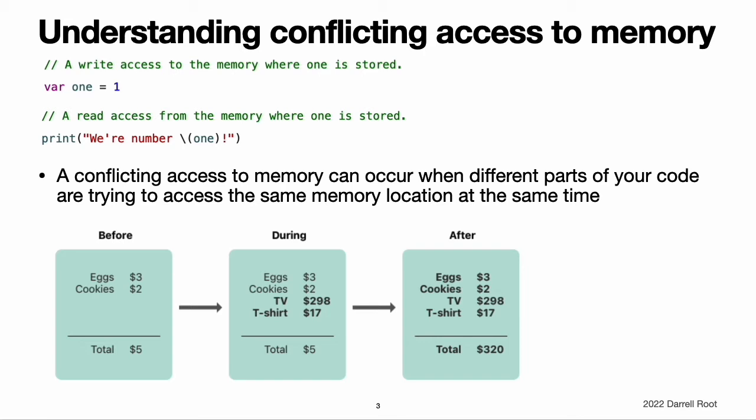If you have written concurrent or multi-threaded code, conflicting access to memory might be a familiar problem. However, the conflicting access discussed here can happen on a single thread and does not involve concurrent or multi-threaded code. If you have conflicting access to memory from within a single thread, Swift guarantees that you will get an error at either compile time or run time. For multi-threaded code, use Thread Sanitizer to help detect conflicting access across threads.